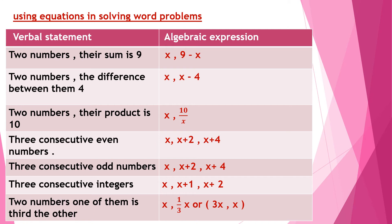Another statement: two numbers whose difference is 4. The numbers will be x and x minus 4, or x and x plus 4. By subtracting these numbers, we get 4. Also, two numbers whose product is 10 would be represented as x and 10 over x.